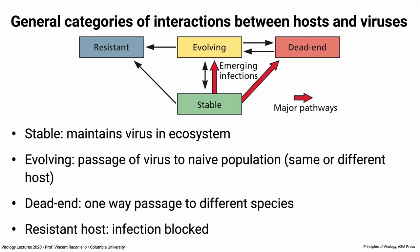Before going into specific examples, let's talk about the general categories of interactions between hosts and their viruses. There are four: stable virus-host relationships (shown in green), which maintain the virus in an ecosystem; in humans, think of herpes viruses, measles, or rhinoviruses — many others. They're human viruses that are stable in us, and we transmit them to other humans. We could also transmit those viruses to other species, which might lead to evolving virus-host relationships.